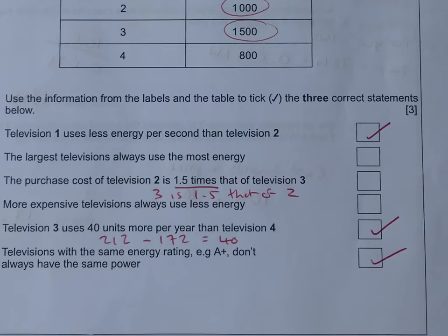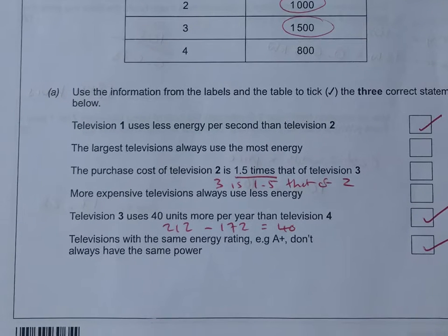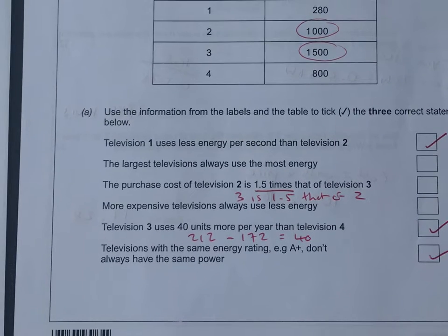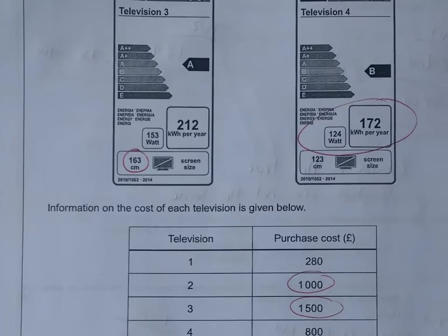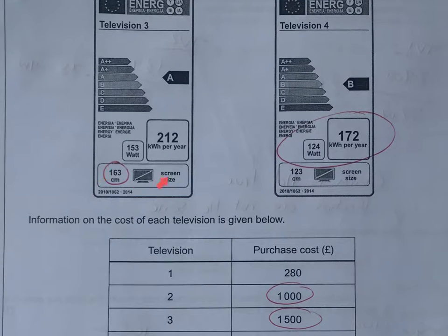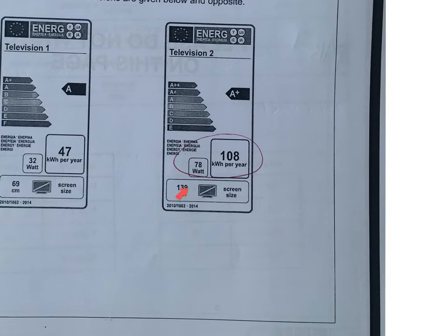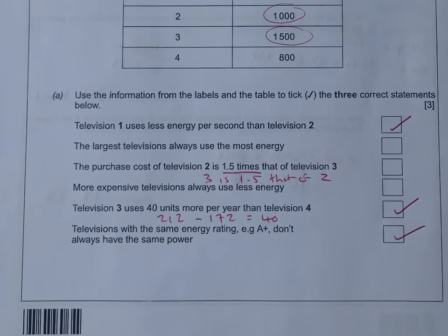So we're looking at one and two, and we can see that 32 watts compared to 78 watts, so that's your first one correct. Now we're looking for three ticks because it's worth three marks. The largest television always uses the most energy, that's not true because there's the sizes of TVs, 163 centimeters, 123 centimeters.